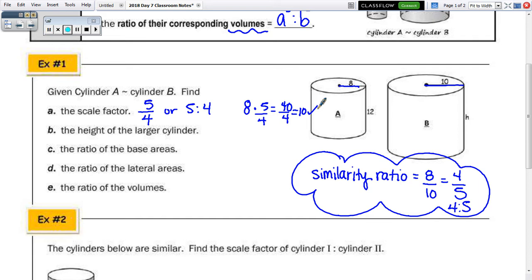The height of the larger cylinder, well, in order to find the height for part B, we need to set up a proportion. Or actually, we can use the scale factor, since we just found it. So we'd want to multiply 12 times 5 fourths to get H. So that would be 60 divided by 4 is, 12 times 5 is 60, and 60 divided by 4 is 15.